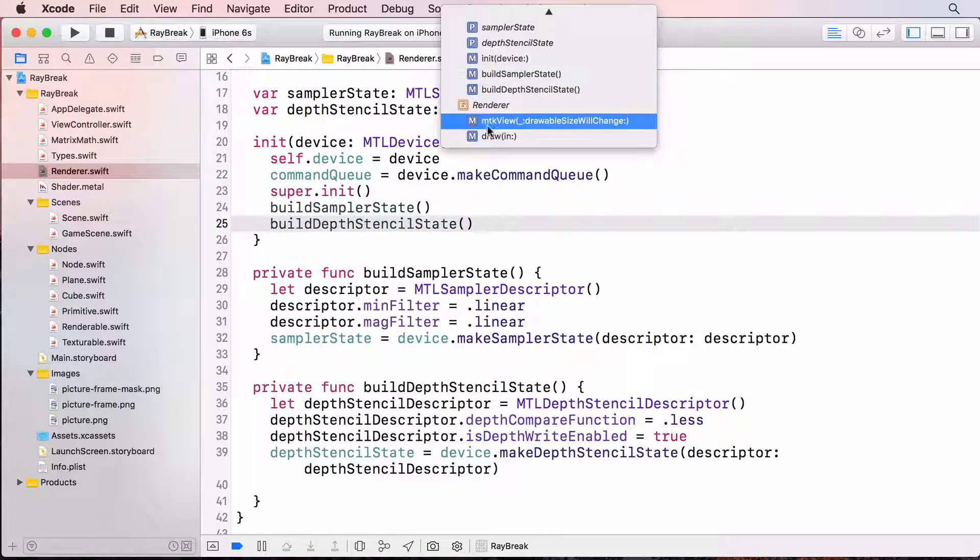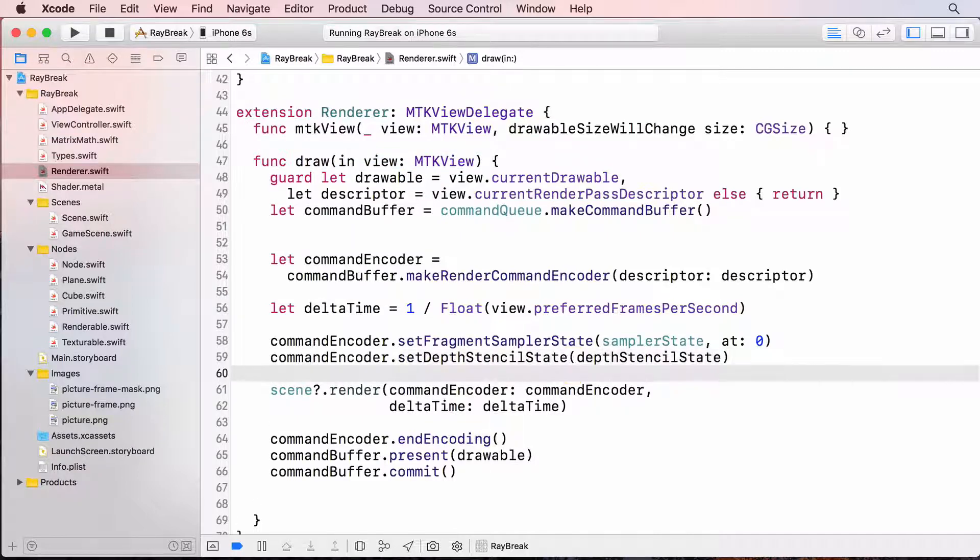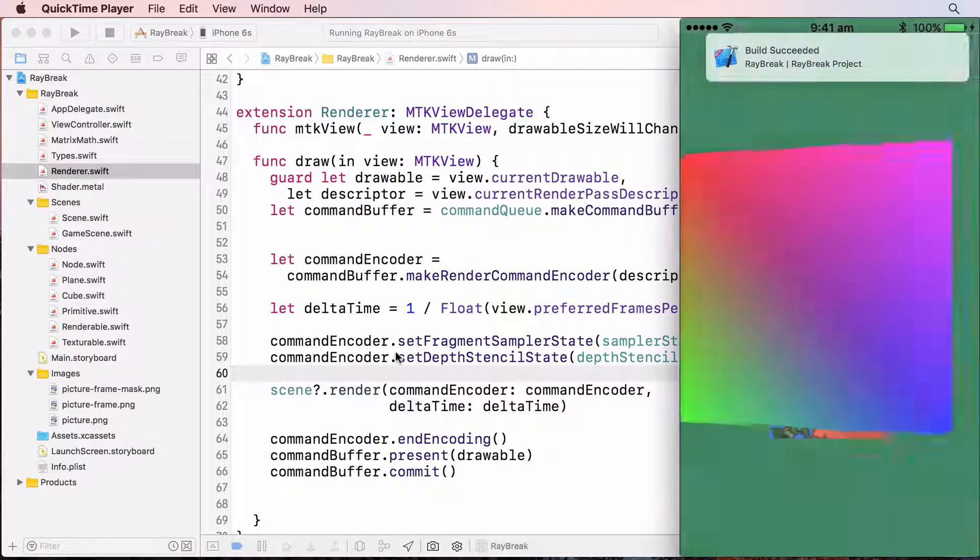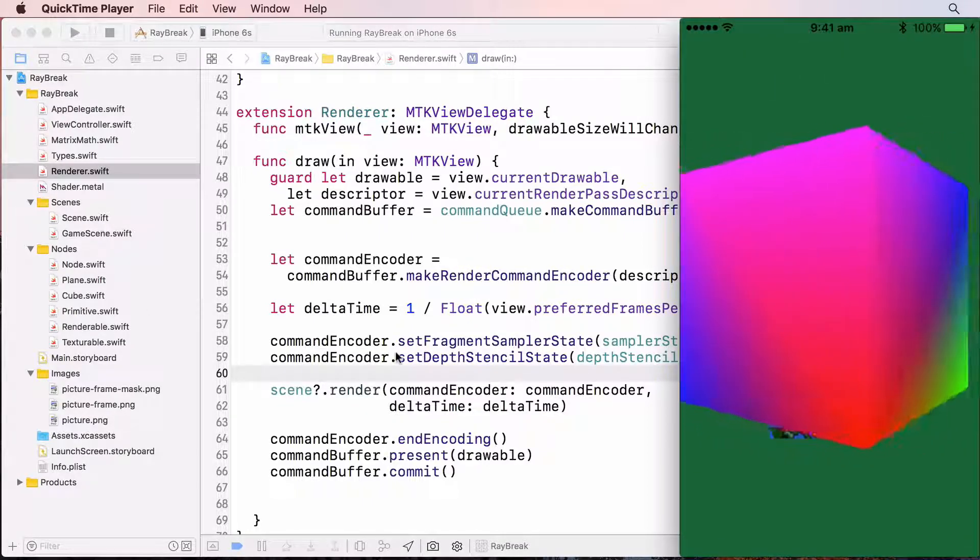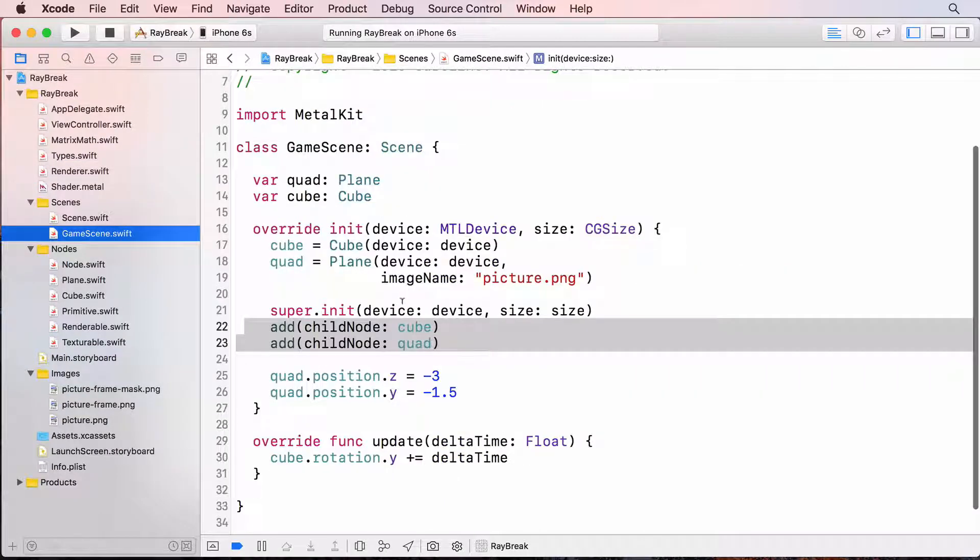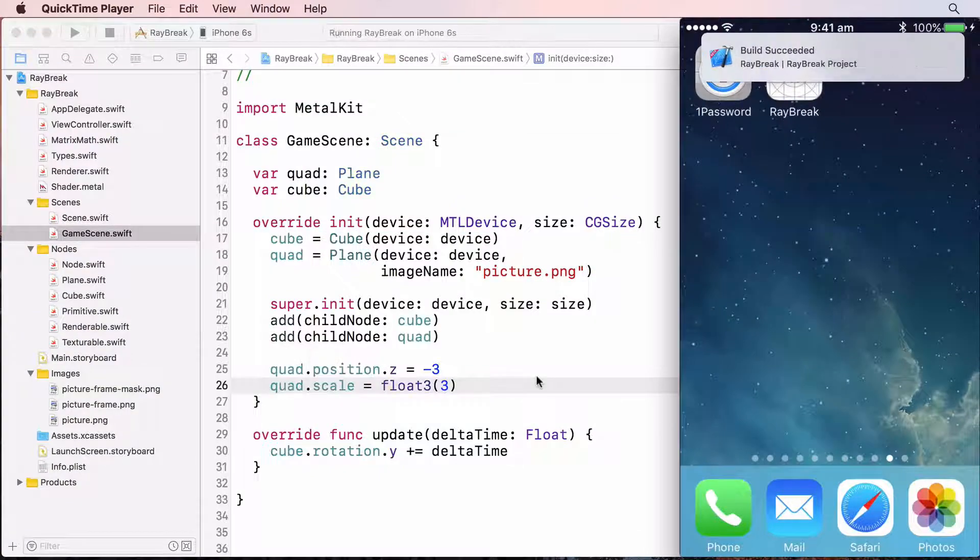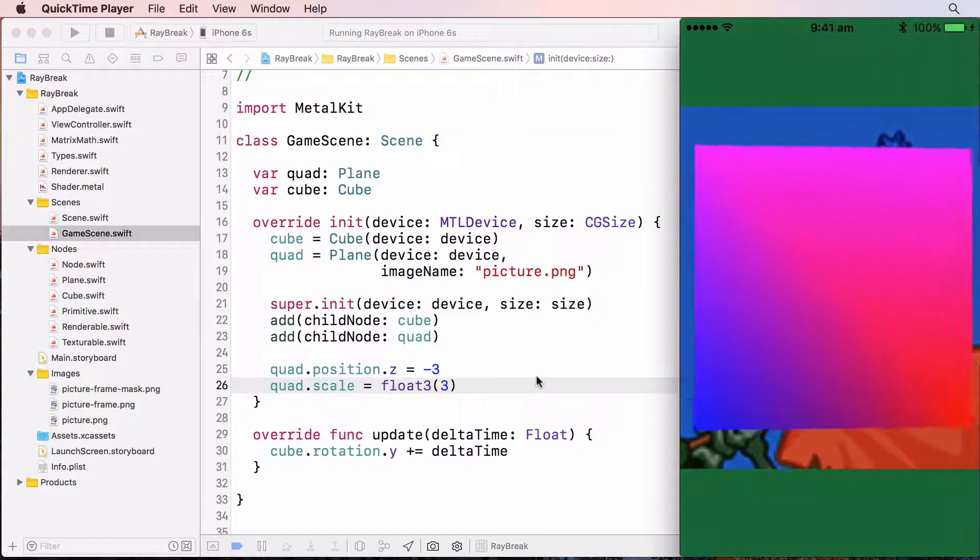In drawIn, I'll set the command encoder's depth stencil state. And build and run. And now the zombie is behind the cube. I'll make the zombie picture bigger in the game scene so we can confirm that. And the zombie is fully behind the cube now.